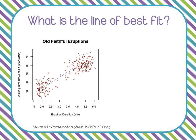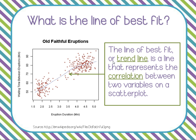Hopefully you remember this example from last time. We looked at this scatter plot where each point represents an eruption of the Old Faithful geyser in Yellowstone National Park. We talked about the positive correlation between duration of an eruption and waiting time between eruptions — the longer the eruption lasts, the longer you wait for the next one. I acknowledged this line existed but told you to ignore it. Well, it's later now, and this is our line of best fit, also called a trend line. Those terms are used interchangeably.